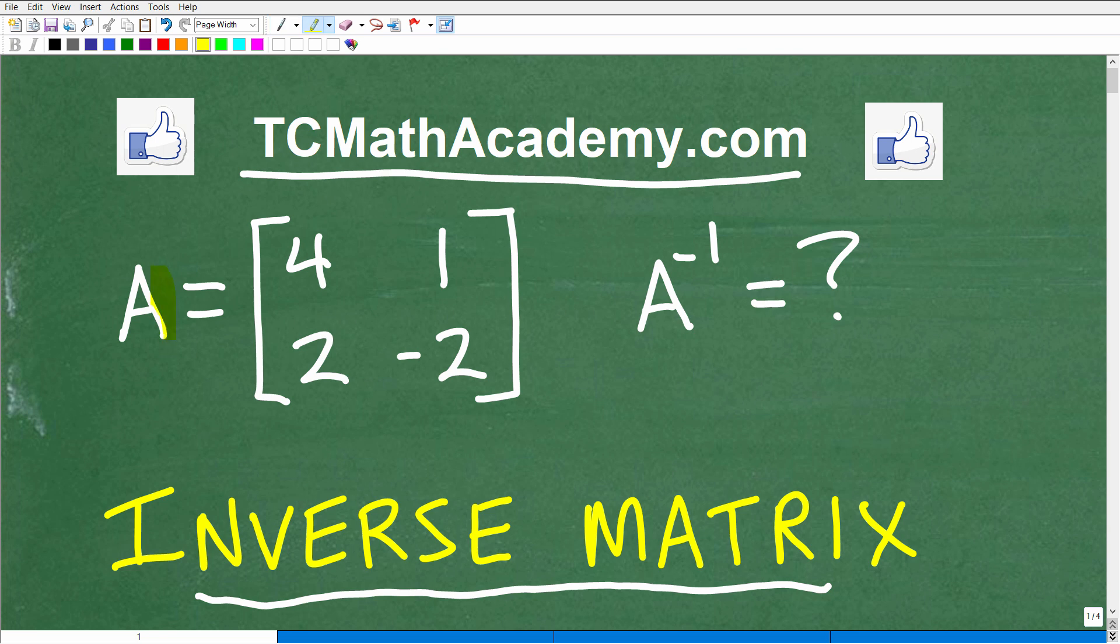So here is the problem. I have matrix A, and you can see it right there, has entries 4, 1, 2, negative 2, and we want to find the inverse of matrix A.